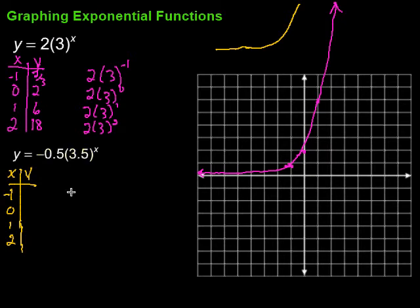I'm going to fill those in, and if I do that, this is going to require a calculator, perhaps. 3.5 to the negative 1 power, I figure out what that is. Multiply it by negative 0.5, and I'm going to get a big, ugly decimal. It's negative 0.14285, and on and on. Lots of stuff there. I'll take that much of it. Then, 0. Well, anything to the 0 power is just 1, so negative 0.5, that would be.